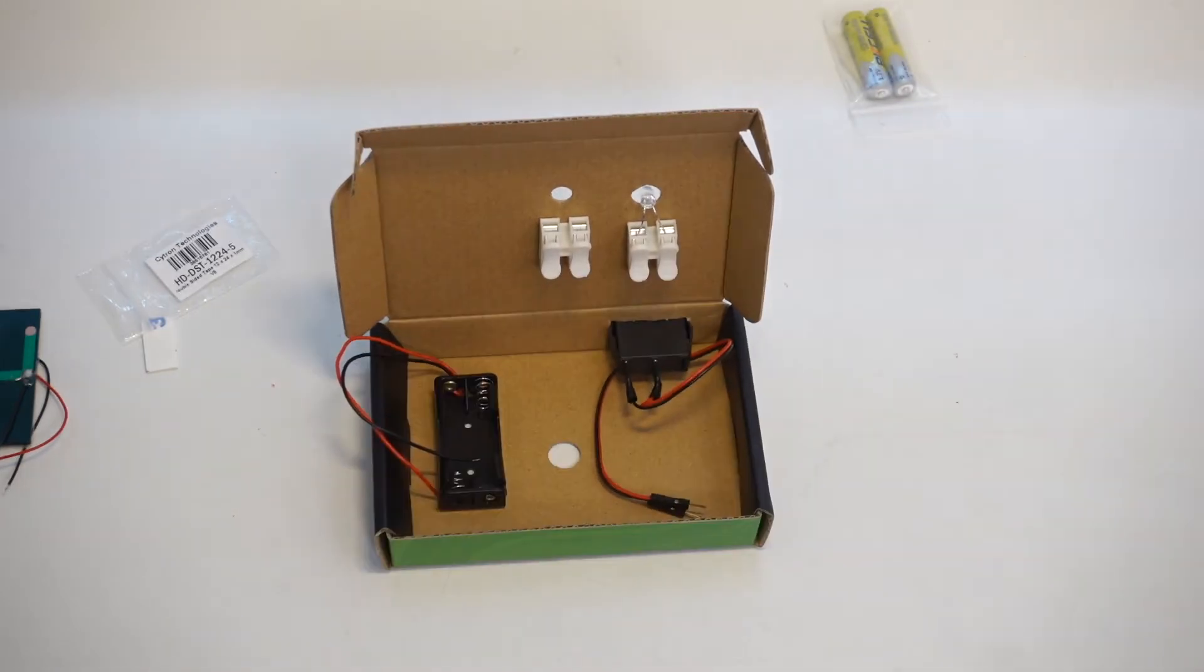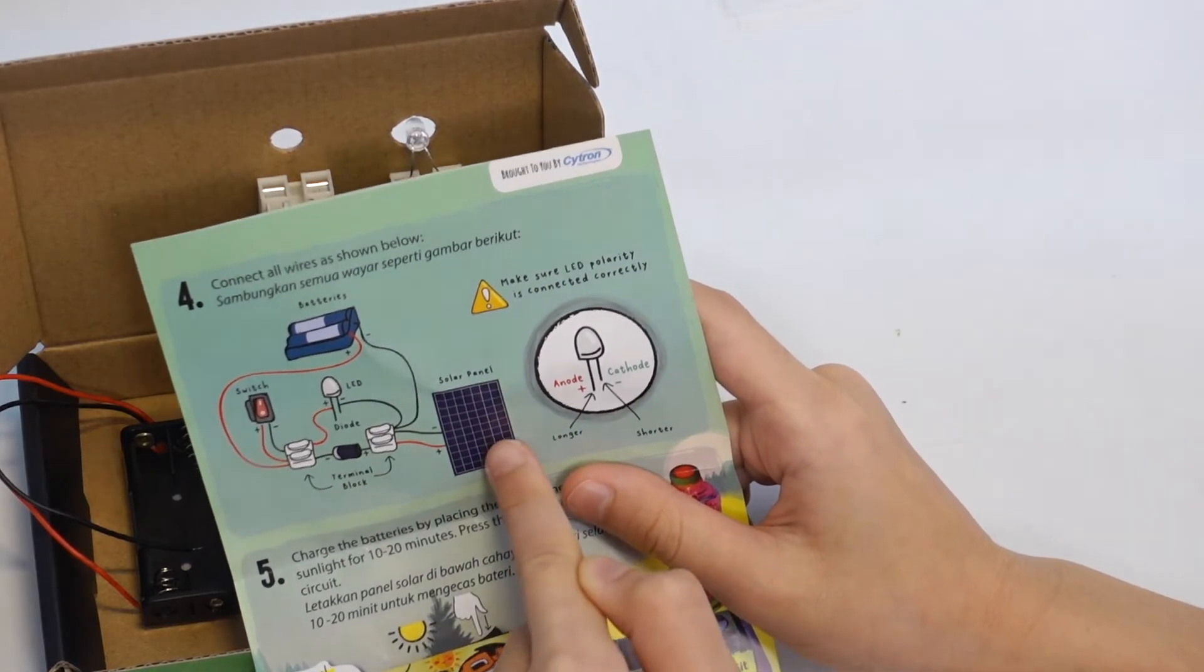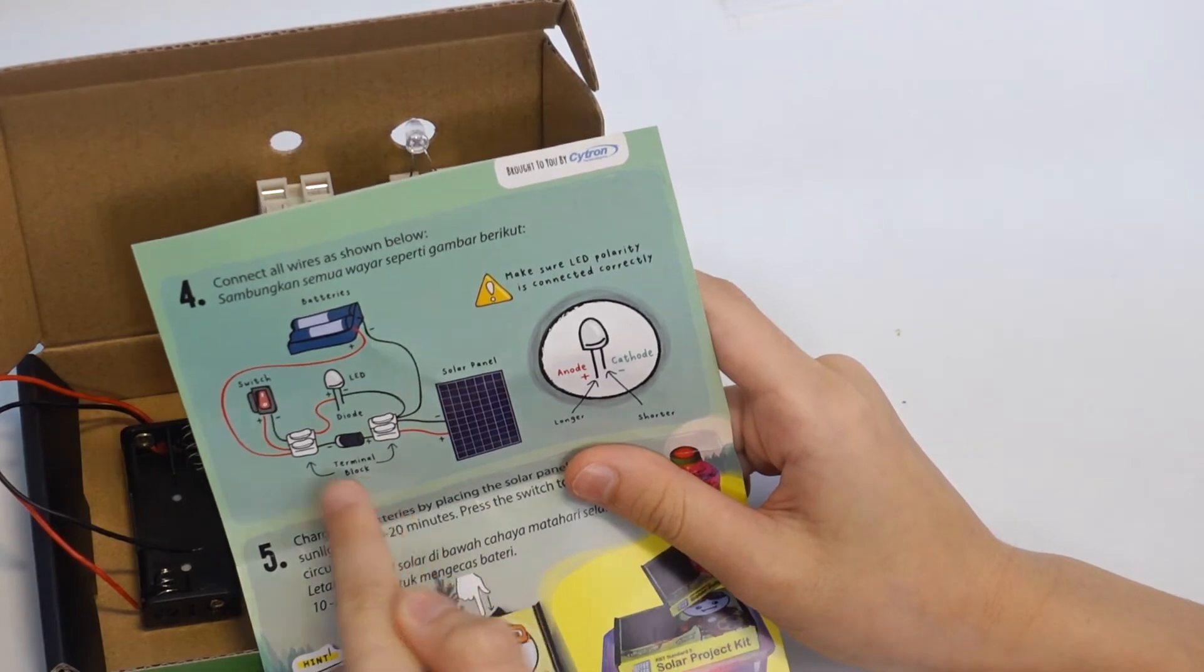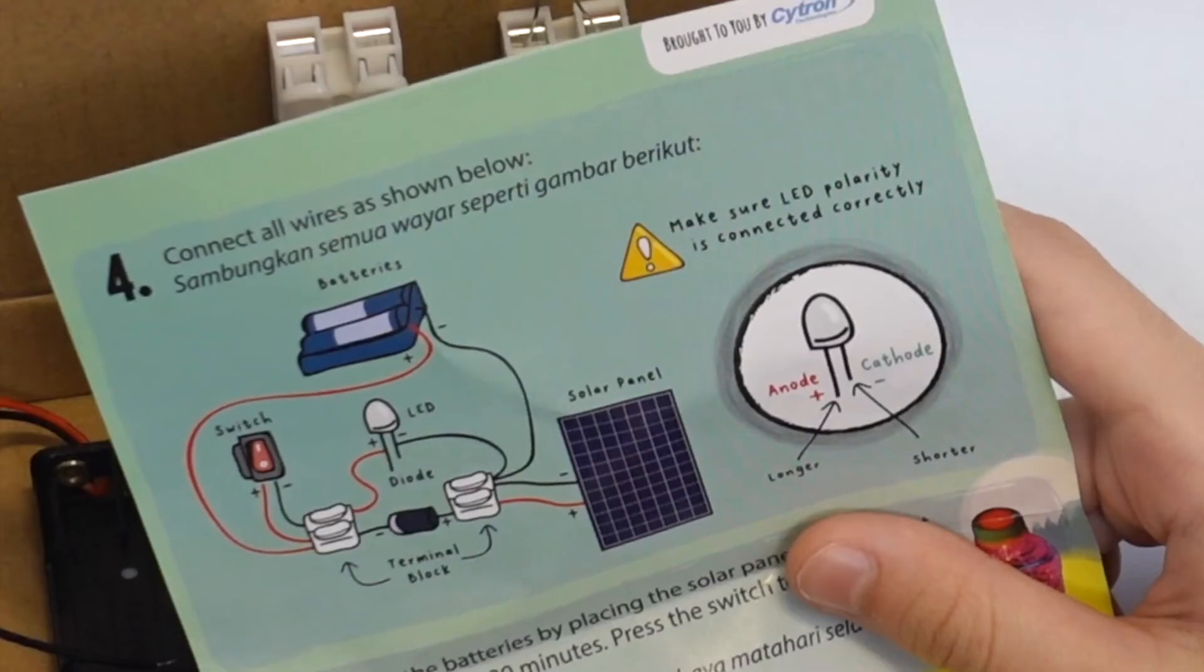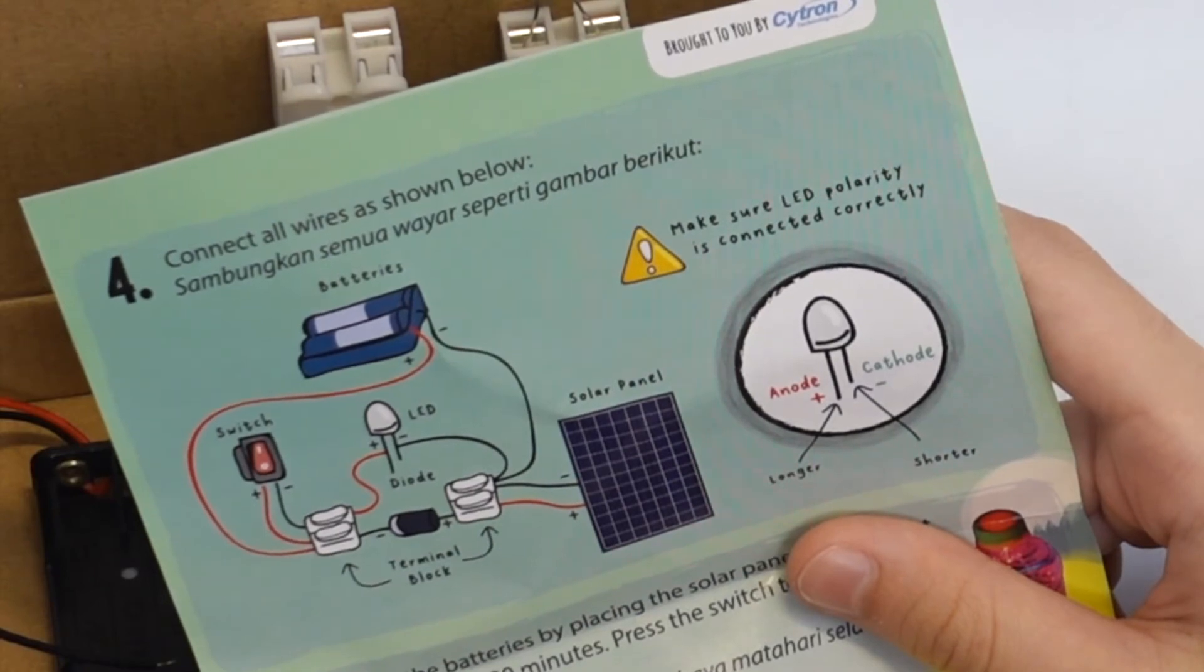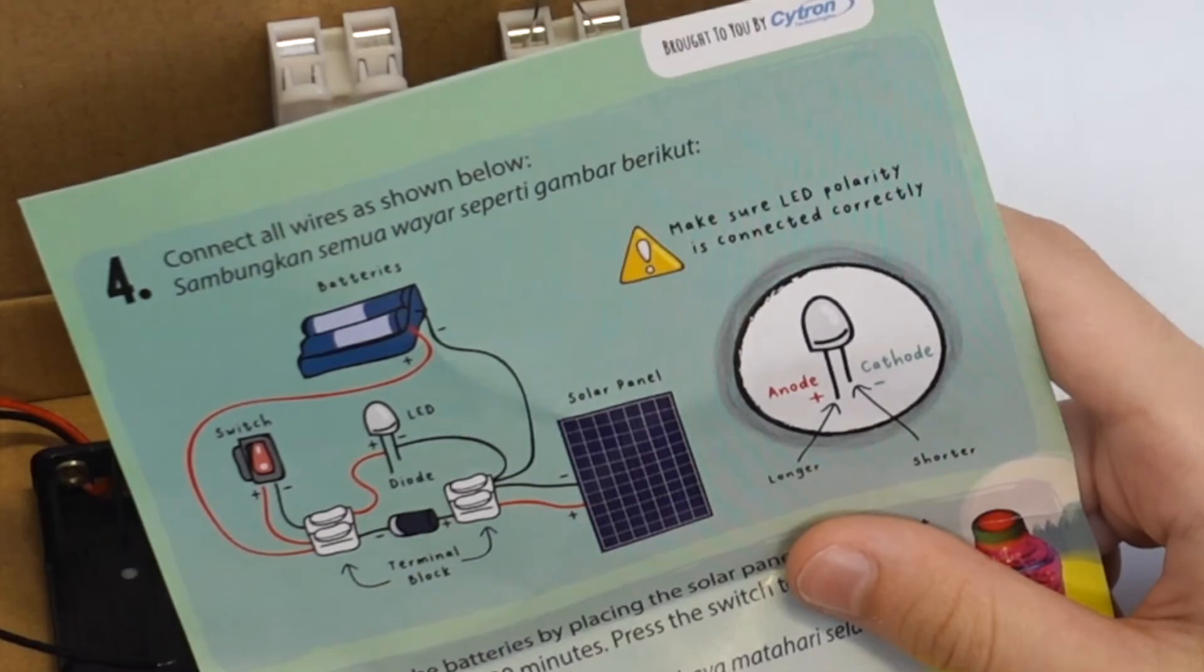Next, we'll be doing the wiring diagram. This is how we are going to connect them up. Solar panel, diode, switch, LEDs, and batteries. Make sure that the positive and negative is correct. Red is positive. Black is negative.